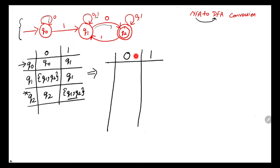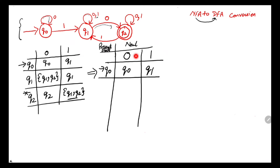Now the conversion process: we'll draw a new transition table, write the inputs 0 and 1, and write the initial state q0. q0 with 0 is q0; q0 with 1 is q1. We call the left column the present state column and the other two columns the next state columns. We then look at the next state column: with 0 it is q0, with 1 it is q1.